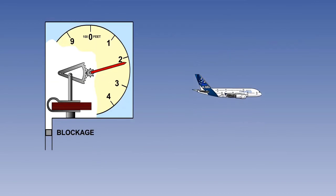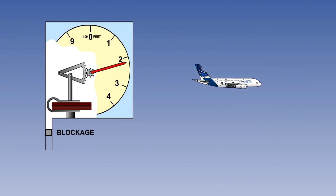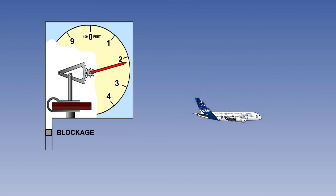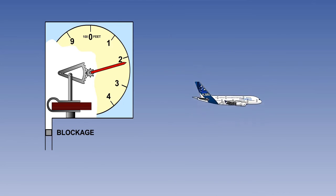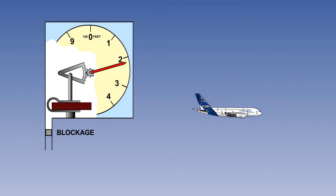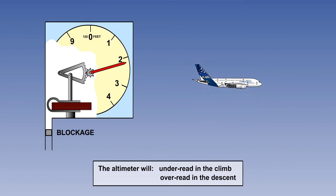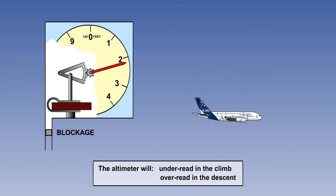Let's now consider what will happen to our pressure altimeter if the static source becomes blocked. At the time of the blockage, the static pressure present in the system will be trapped and any changes in static pressure which subsequently occur outside the blockage will not be sensed. In other words, the blockage will cause the altimeter to freeze at that indicated altitude — it will under-read in a subsequent climb and over-read in any subsequent descent.